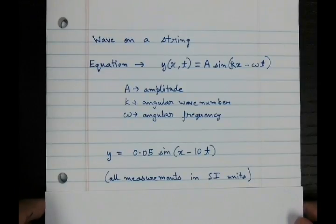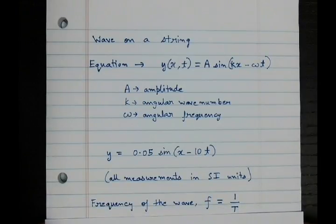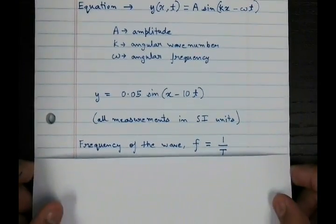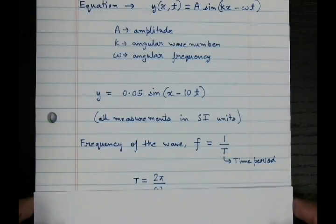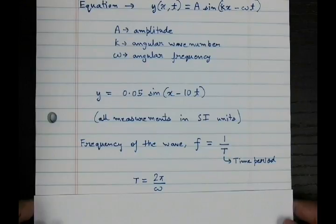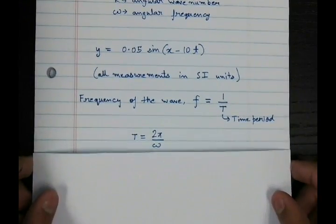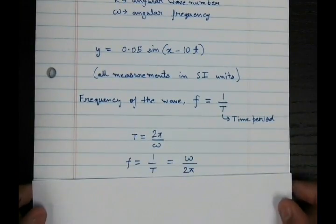Let's say we want to find out the frequency of the wave. The formula for the frequency of the wave is given by 1 over capital T. Here capital T is the time period. And capital T is given by 2π by ω. So we get our frequency equal to ω upon 2π.